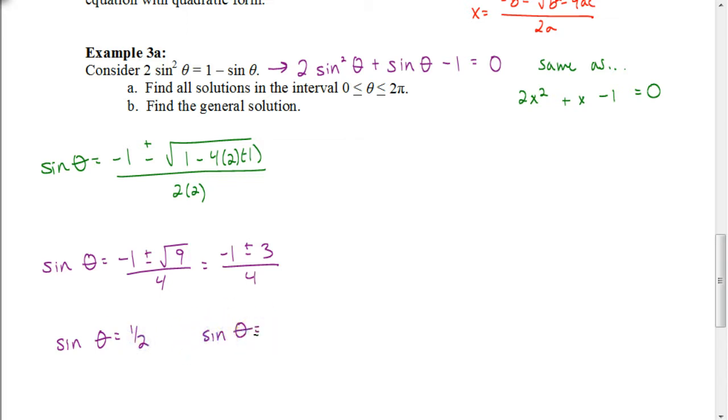And then I take the sine of theta, I find the other solution. Negative 1 minus 3 is negative 4. And negative 4 divided by 4 is negative 1.